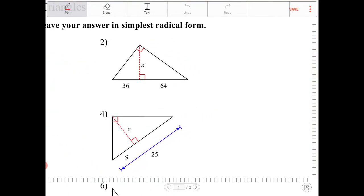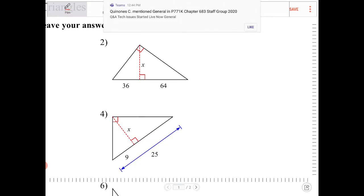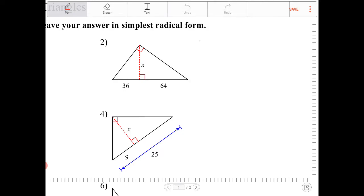So question number two, I have the overlapping right triangle here. And if you recall from the lesson, we can just directly apply the geometric mean equation there. So I can say L times M is equal to N squared. Therefore, I can say 36 times 64 is equal to X squared.